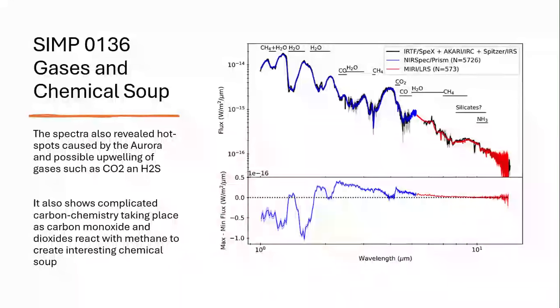and it revealed an upwelling of these gases and hot spots which we think are caused by aurora. The aurora, falling of electrons into the upper atmosphere triggering chemical reactions and energizing the gases, is producing a very complex carbon chemistry as the carbon monoxide and dioxide get energized by the electrons and are triggered to react with the methane and ammonia and create all sorts of interesting chemical soup in this very peculiar atmosphere. Absolutely fascinating.